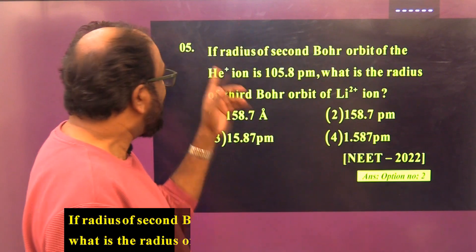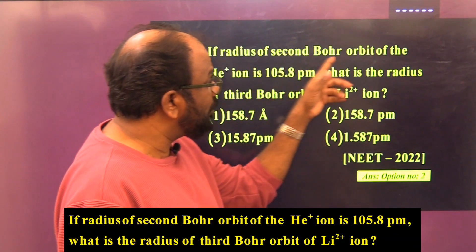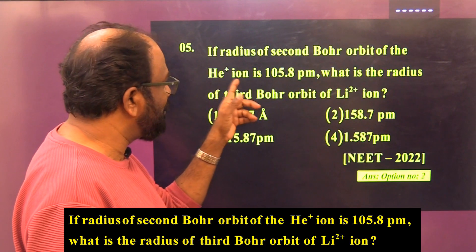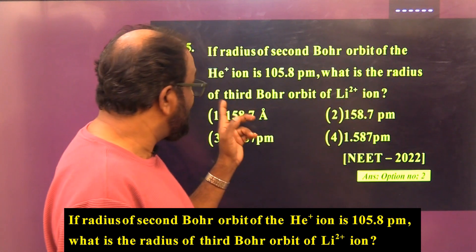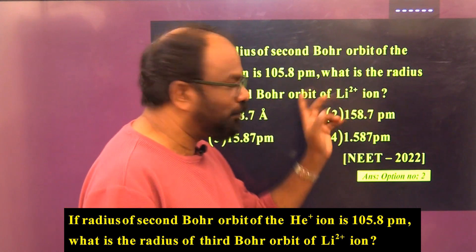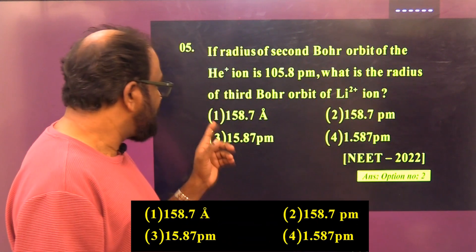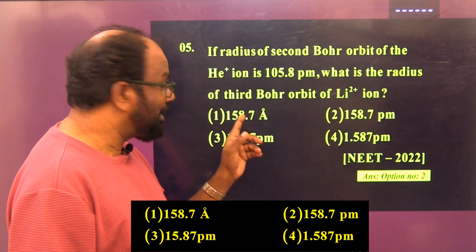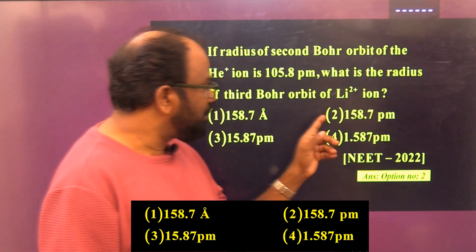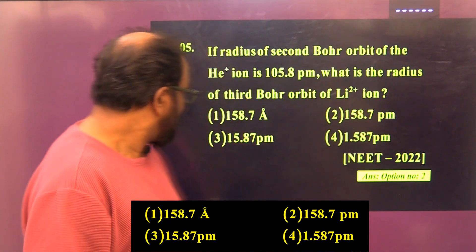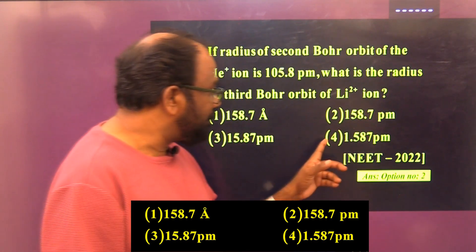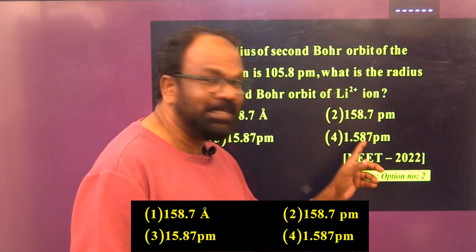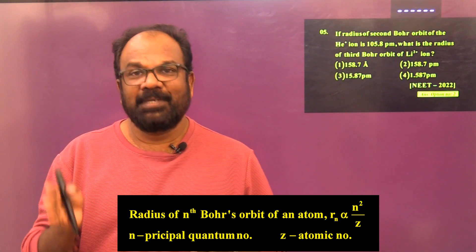Question number five: If the radius of the second Bohr's orbit of the helium plus ion is 105.8 picometer, what is the radius of the third Bohr's orbit of Li2+ ion? Option 1: 158.7 angstrom, Option 2: 158.7 picometer, Option 3: 15.87 picometer, Option 4: 1.587 picometer.